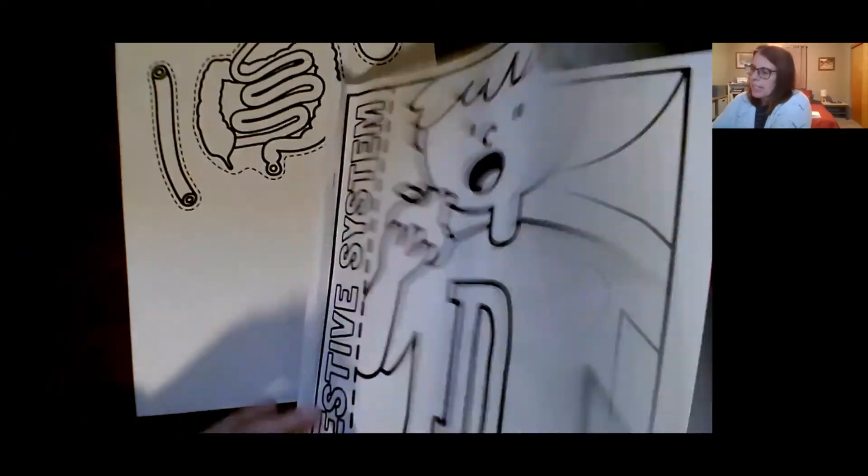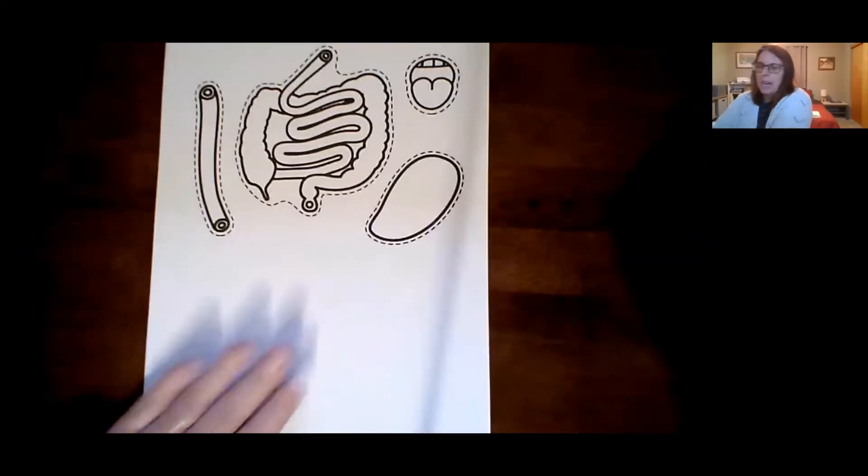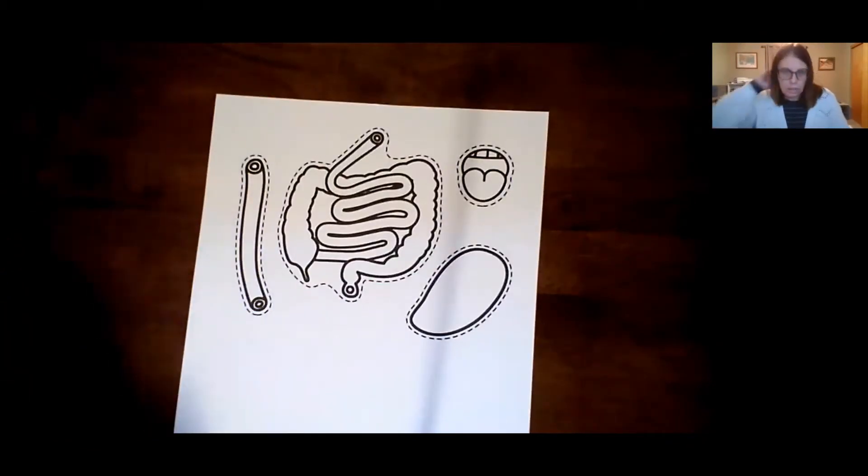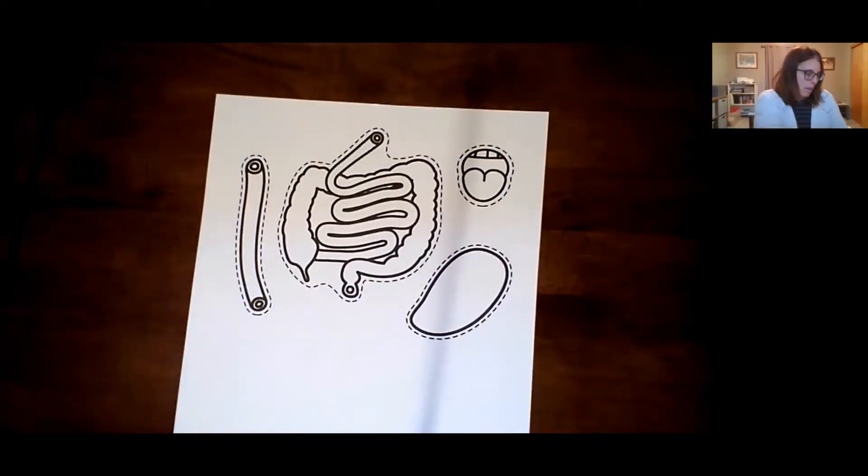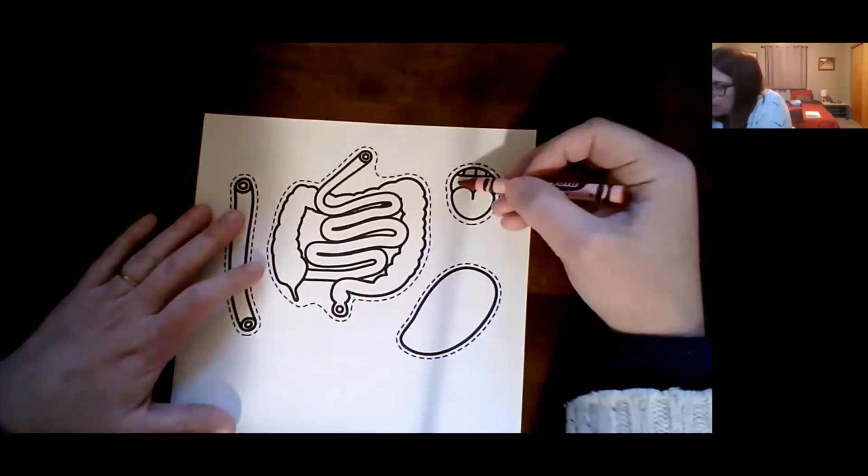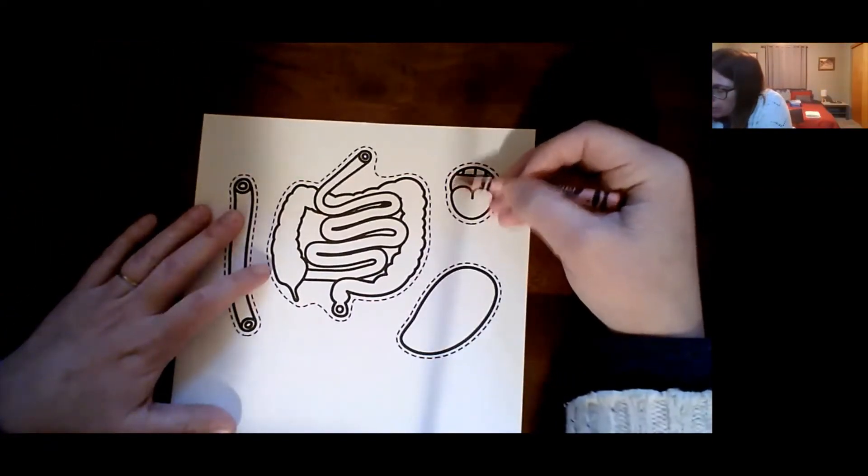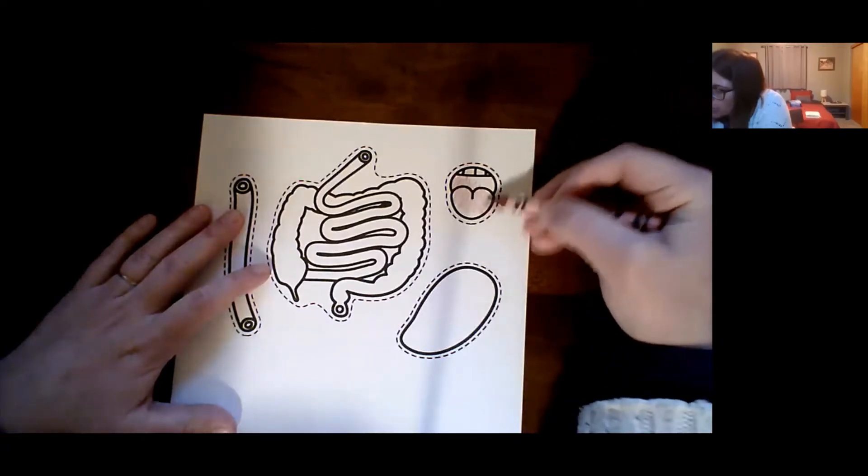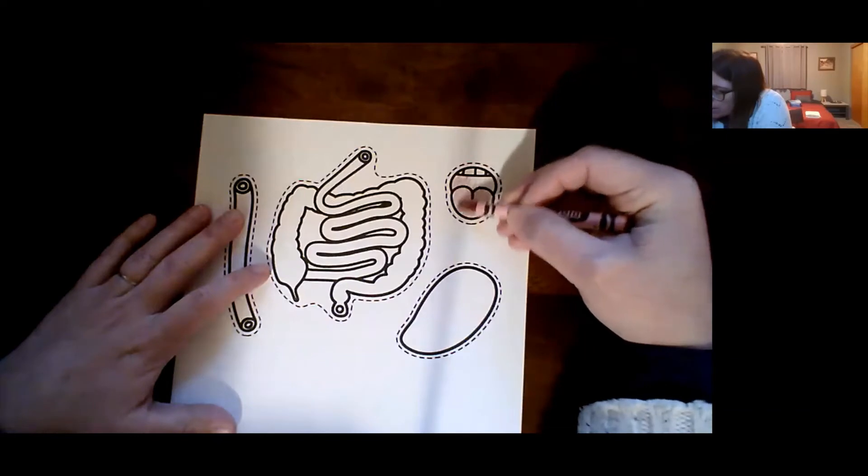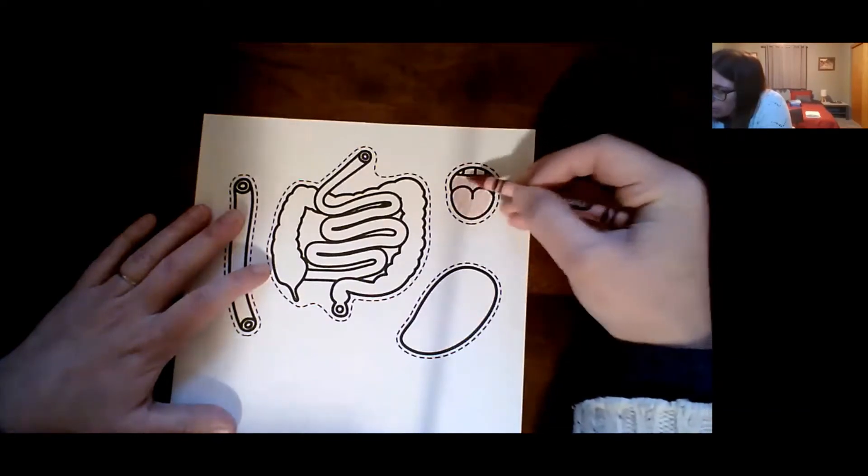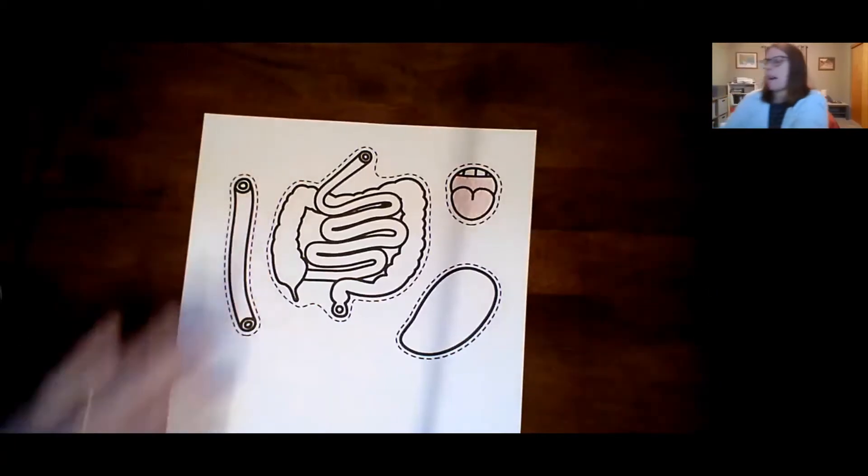So the first thing we're going to do is add some color to these parts of the digestive system. So let's think about what colors we'd use. So if you're coloring the mouth, what color do you think? We've done this a couple times this week, so you might be familiar. I'm going to color red. Okay, so we'll do this one red.